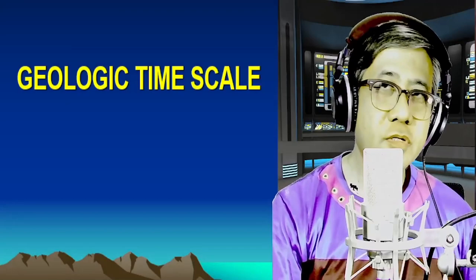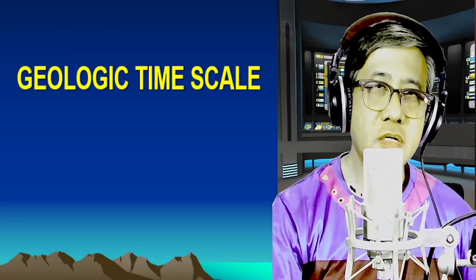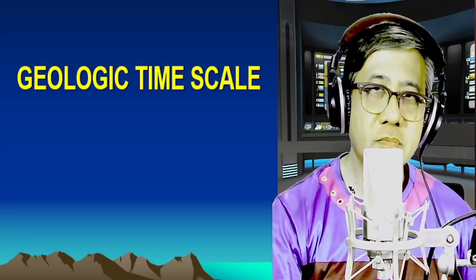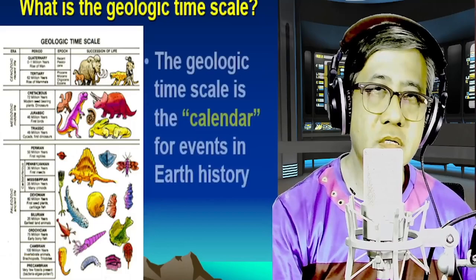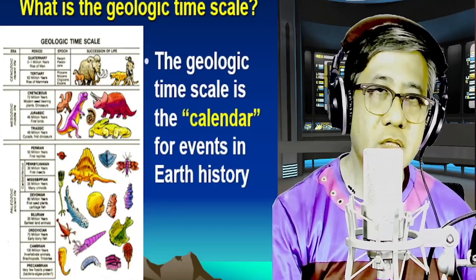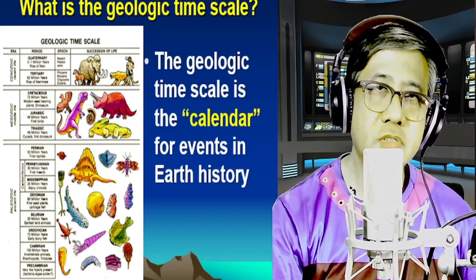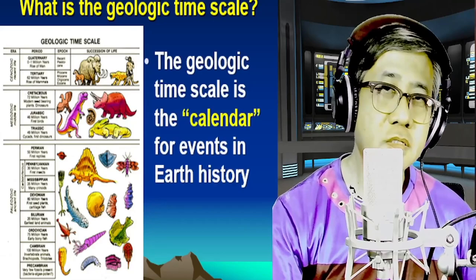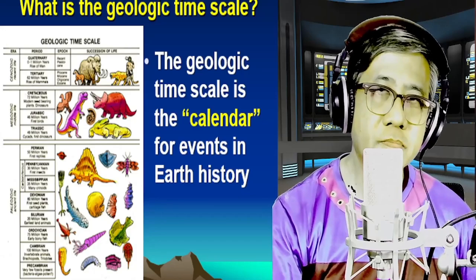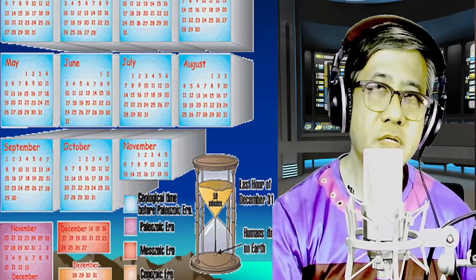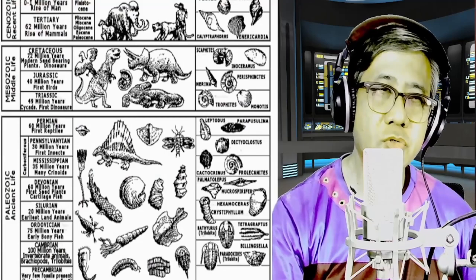Good day everybody. For this lesson on evolutionary biology, we shall study the geologic time scale. The geologic time scale is basically a calendar that shows major events that occurred in the earth's history. This geologic time scale is divided into three eras: the Paleozoic era, or ancient life era.